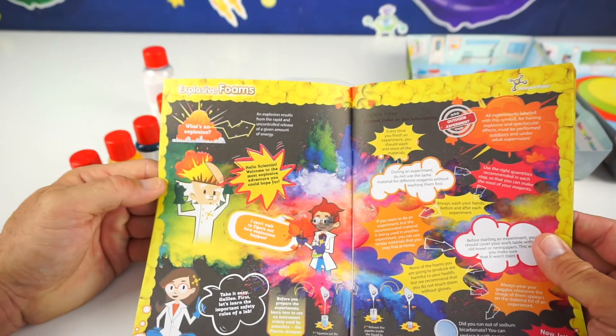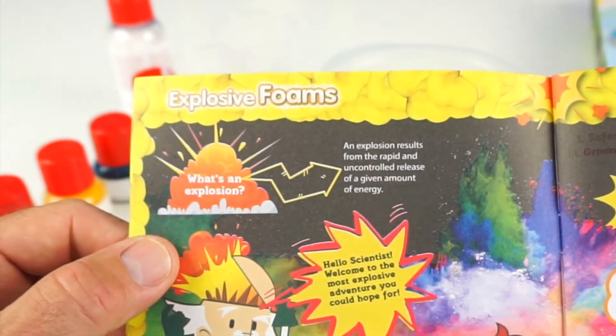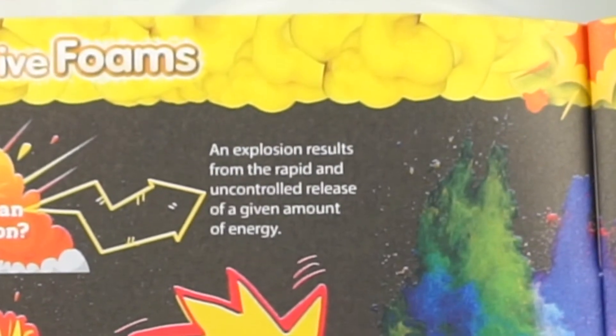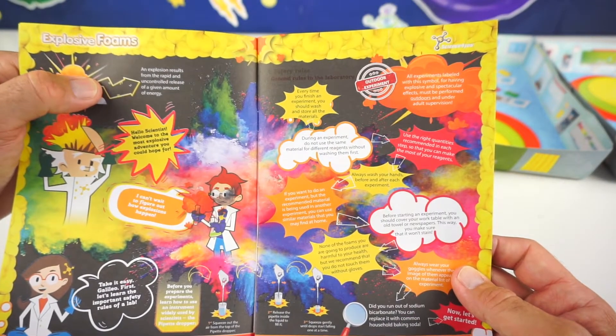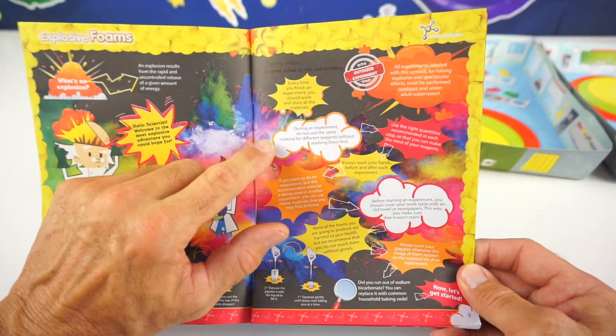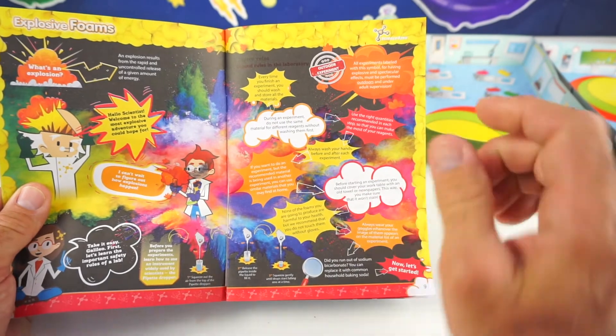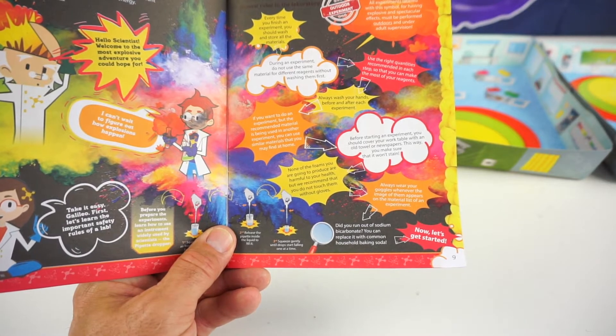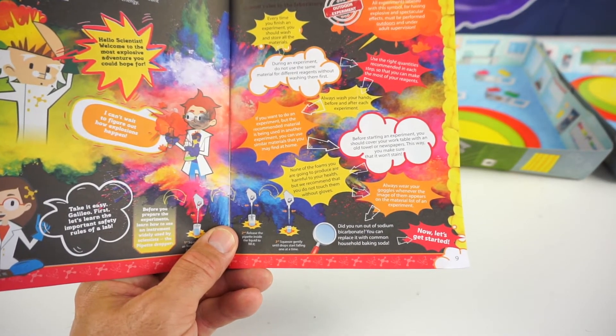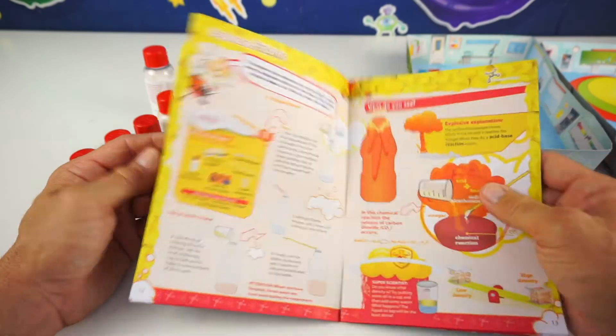And here are some explosive foams and some different facts to read. What's an explosion? Well, an explosion results from a rapid and uncontrolled release of a given amount of energy. Also up here it says, every time you finish an experiment, you should wash and store all the materials. Some of these require outdoor experiments too. It says here during an experiment, make sure you don't use the same instrument twice. Make sure you wash it first before you perform your next experiment. So it also says none of these foams you are going to produce are harmful to your health. But we recommend that you do not touch them without gloves. And on this page it gives you some fun facts about science and explosions.